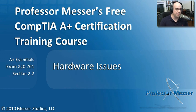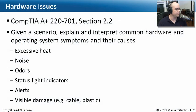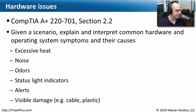Welcome to this module of Professor Messer's free CompTIA A-plus certification training course on hardware issues. I'm James Messer. In this module, we're going to go through the requirements from the CompTIA Exam 220-701, that's the Essentials Exam, Section 2.2, where we need to explain and interpret common hardware and operating symptoms and their causes. We'll talk about excessive heat, noise, odors, status light indicators, alerts, and visible damage.